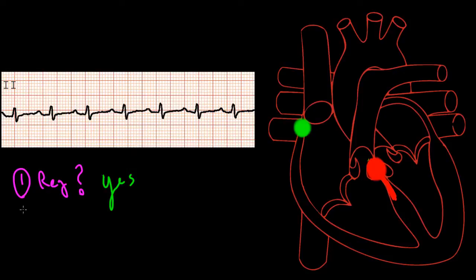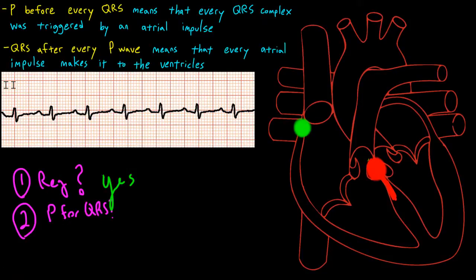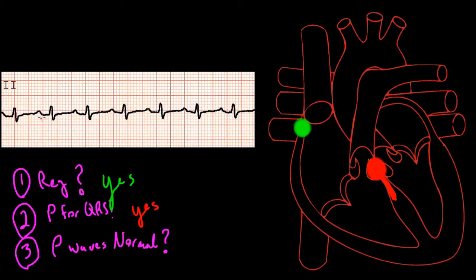Second, we ask ourselves, is there a P for every QRS? And looking closely at all the P waves, you can see that there is one P wave for every QRS, and that all the P waves look approximately the same. Next, we ask ourselves, are these P waves normal? As you can see, the P waves are upright and lead to reasonably narrow, not very large. And so we can say, yes, these P waves are normal. When you have a narrow complex tachycardia with a P for every QRS, and a QRS for every P, that's regular rhythm, with normal P waves, you have sinus tachycardia.